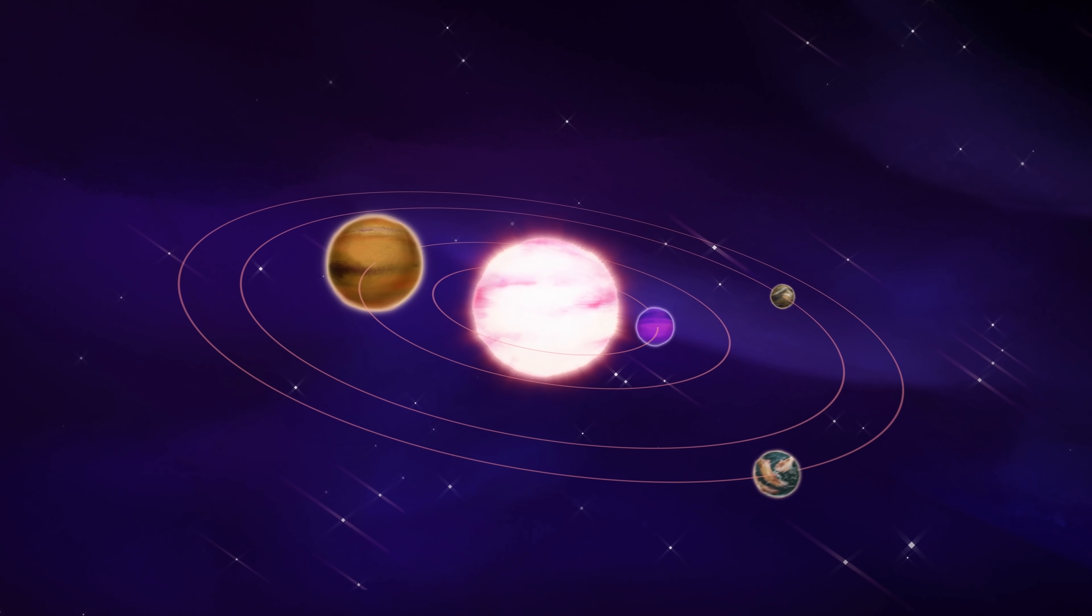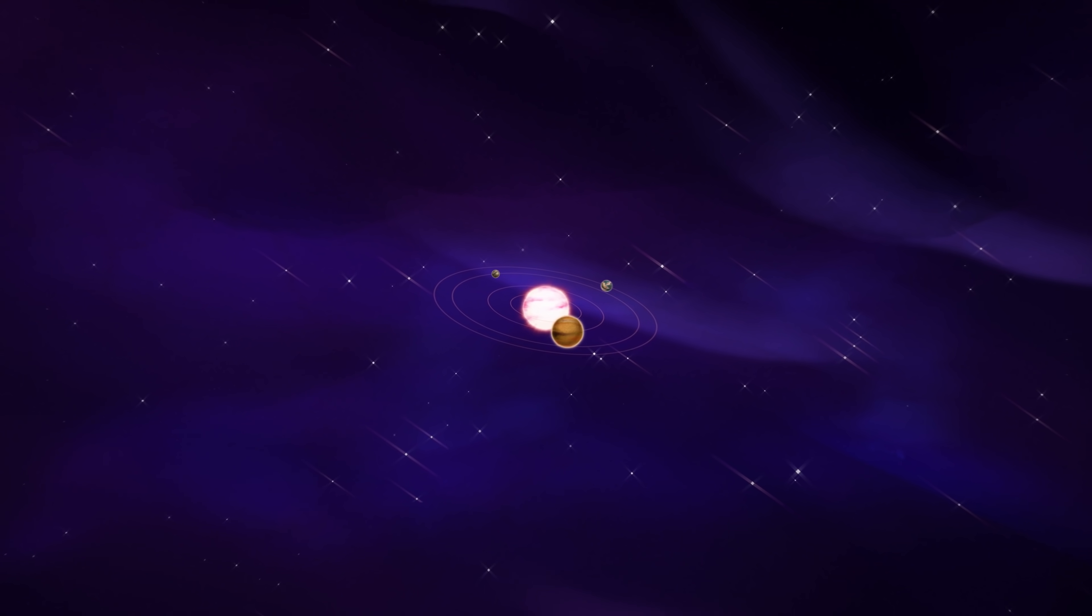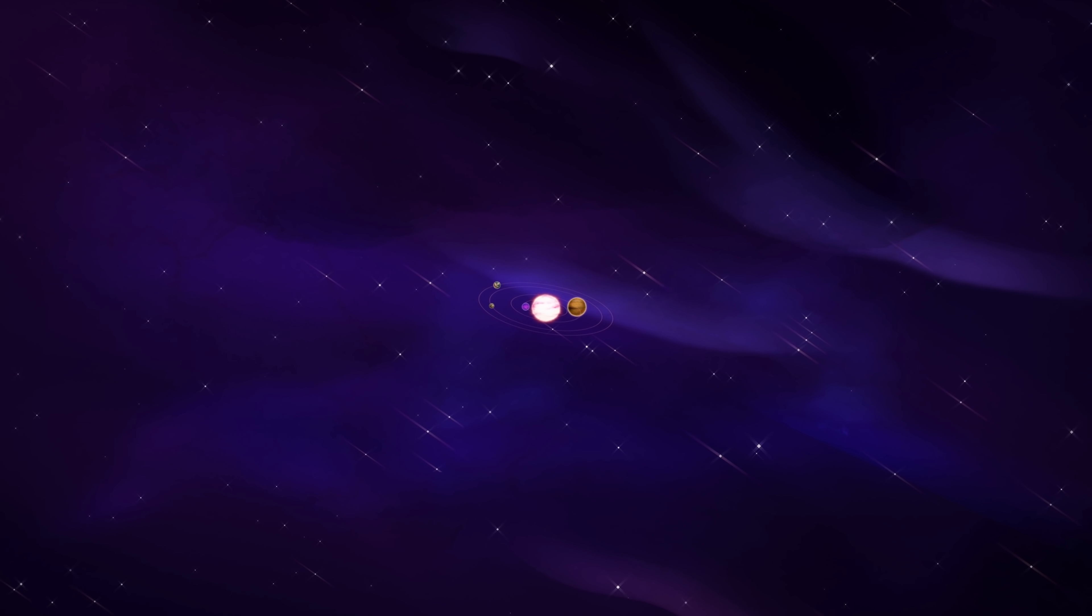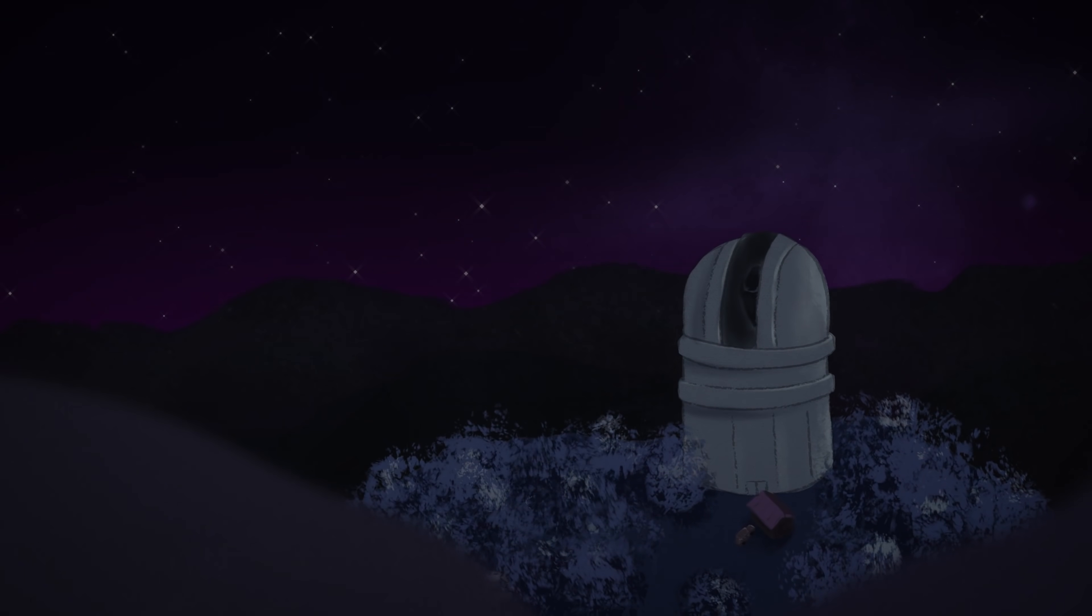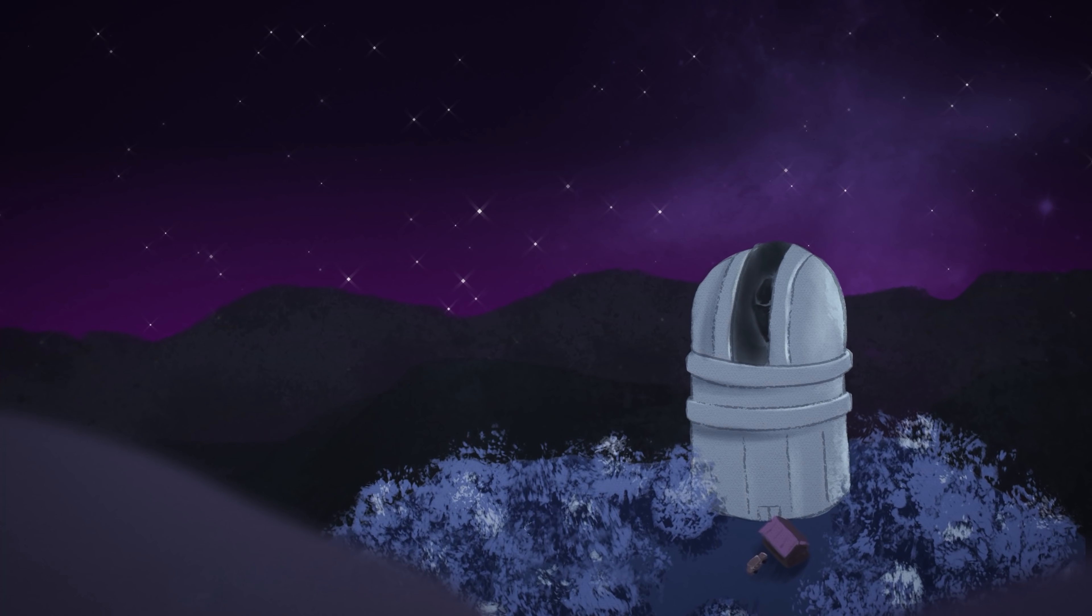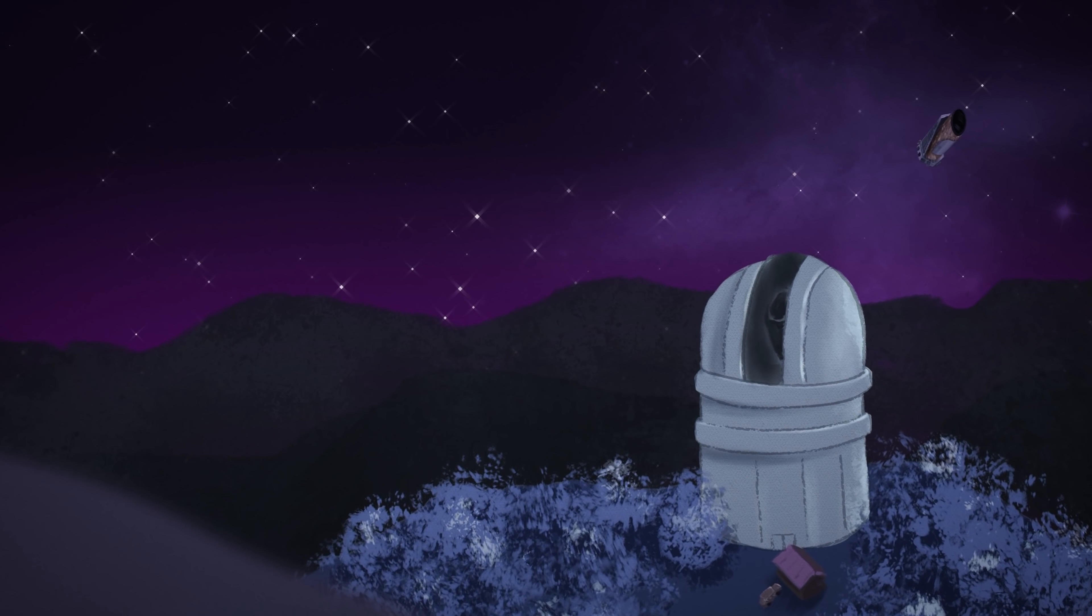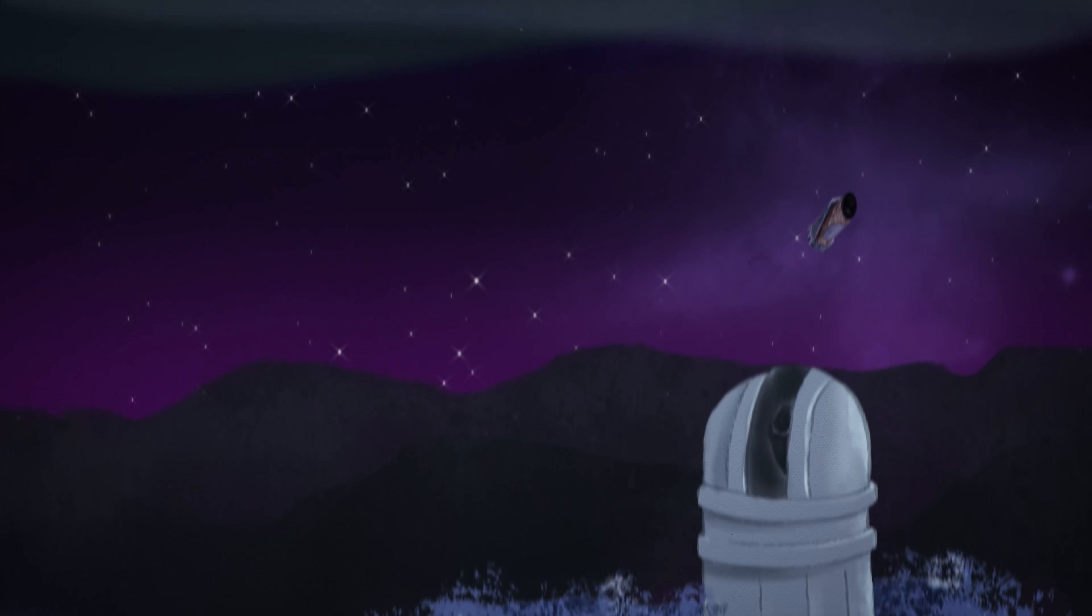Now, just the fact that they orbit other stars means exoplanets are extremely far away. Most are too far to even dream of sending space probes to explore them. So we study them in other ways, like with telescopes on the ground and in space that can observe these far-off planets from right here in our solar system.